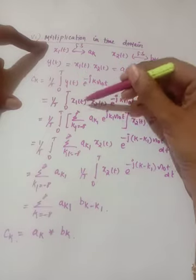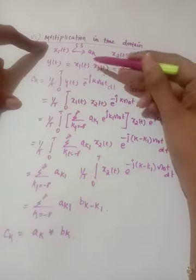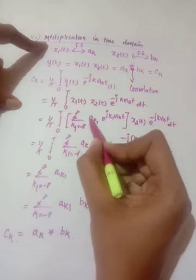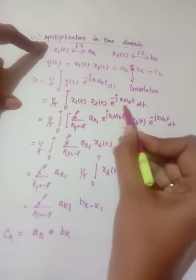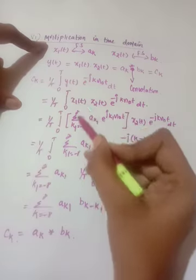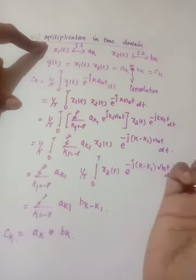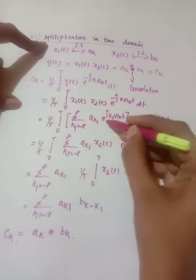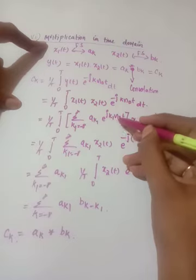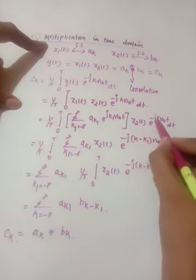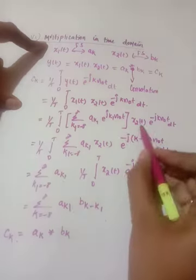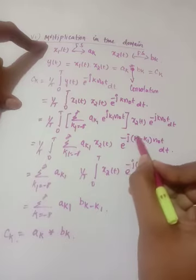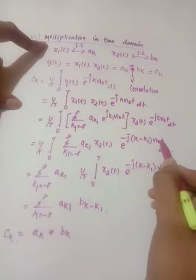We substitute y(t) = x1(t)·x2(t). We know x1(t) can be written as the summation of ak1 e^(jk1ω₀t), using k1 as a dummy variable. So ck becomes (1/T) times summation from k1=−∞ to ∞ of ak1 e^(jk1ω₀t) · x2(t) · e^(−jkω₀t) dt. Combining the exponentials gives e^(−j(k−k1)ω₀t).